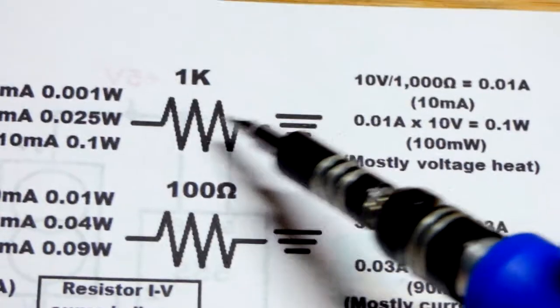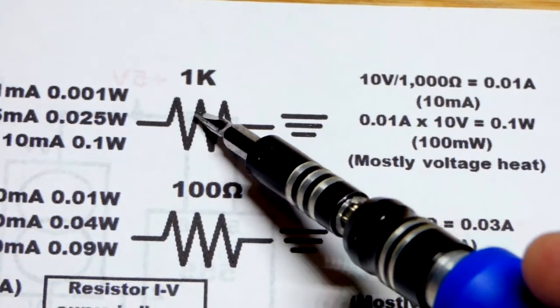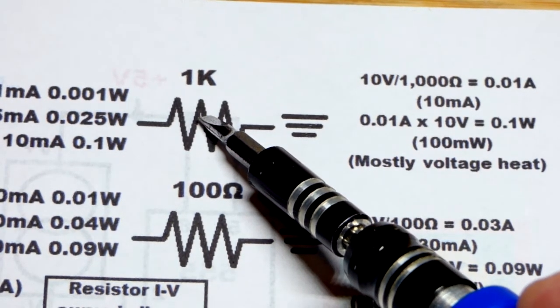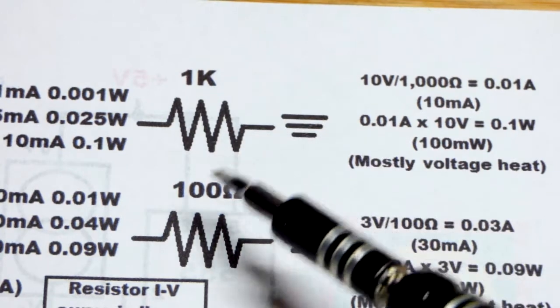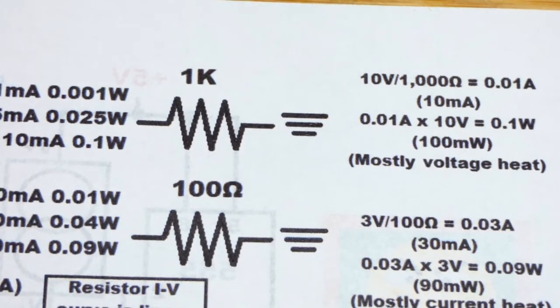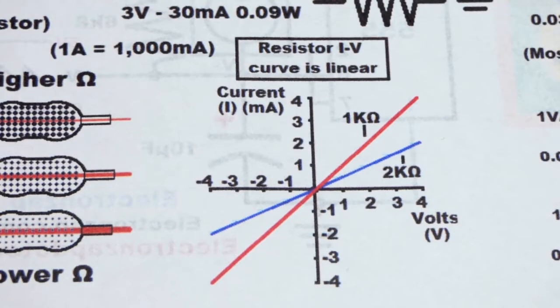So it's generally safe to go higher in resistance than you expect. And if it's too high, you can figure that out and go lower. That's generally pretty safe. The danger is going too low in resistance before you really understand the power needs of the circuit.